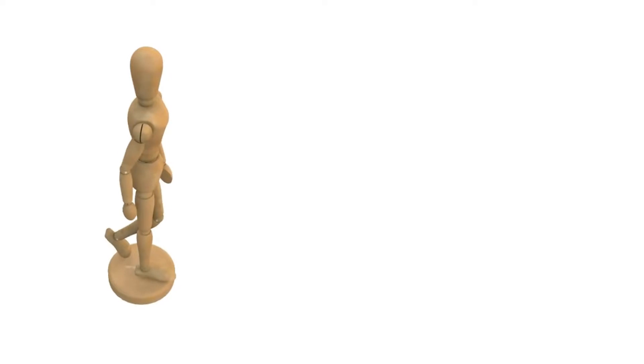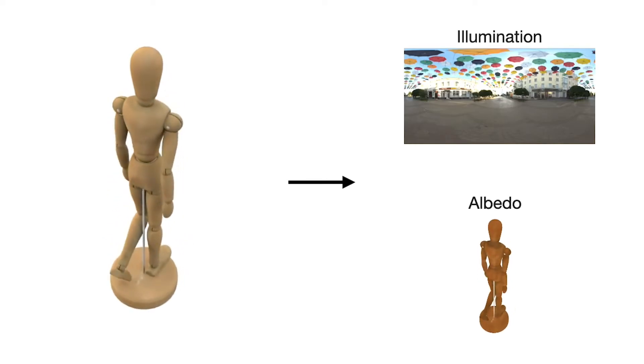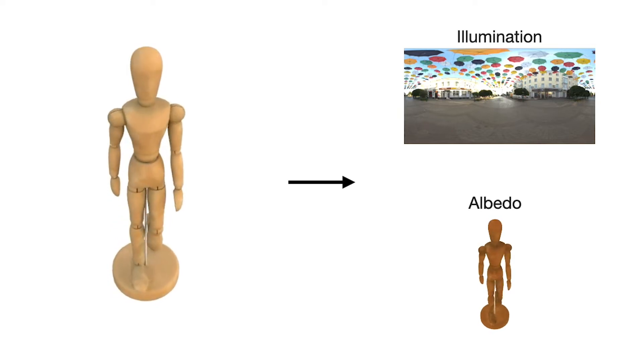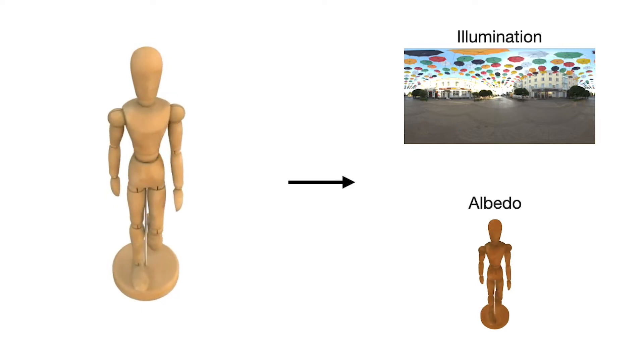Inverse rendering is a core problem in computer vision and graphics. In this work, we focus on one of its components: recovering the underlying environment illumination and material properties from images of an object with known geometry.